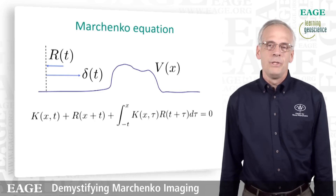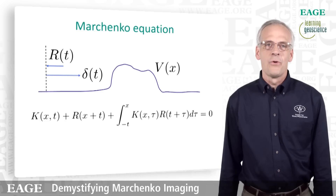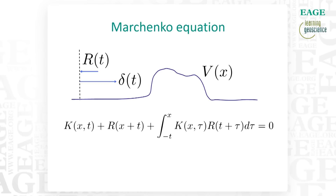What you do is solve the integral equation shown here for a function K at a fixed value of x. After you've solved this integral equation, you take this derivative and there you have your potential. This method is completely exact — there are no approximations involved — and it gives us a clear recipe to reconstruct the potential given the reflectivity.